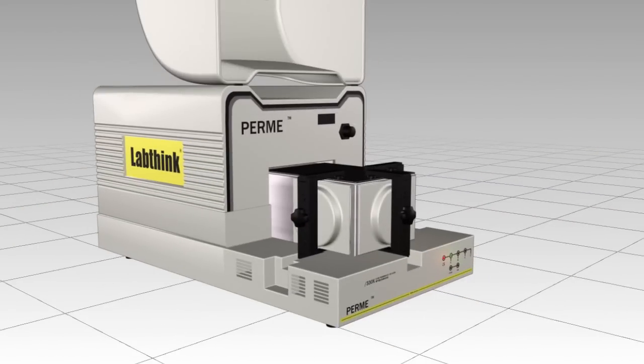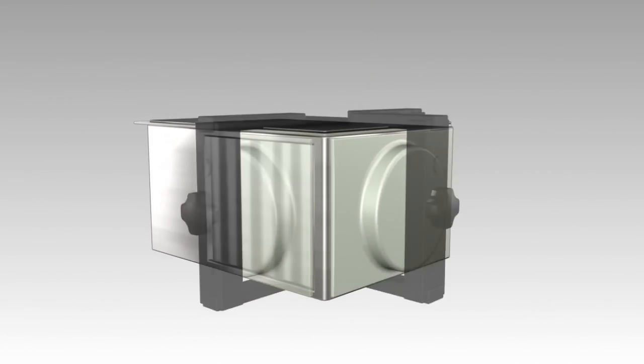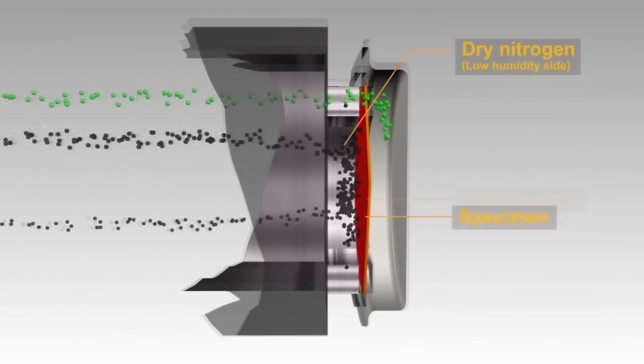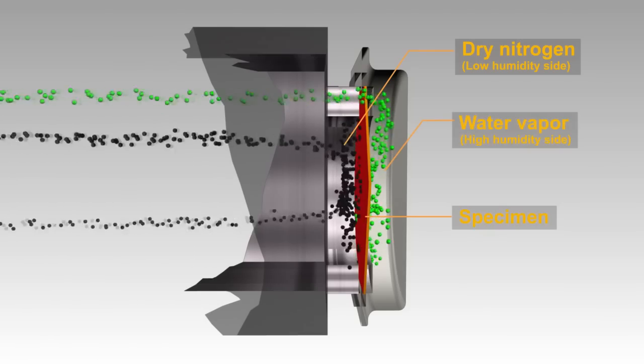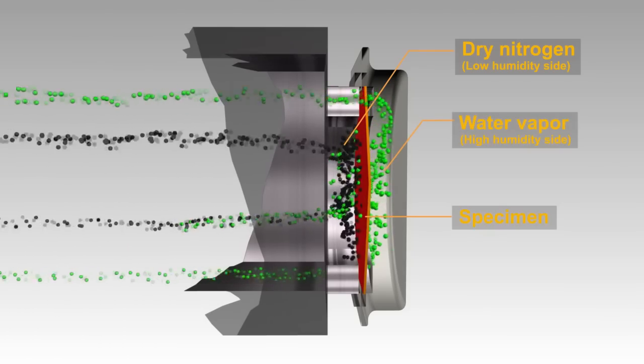W3330 works by firstly establishing a humidity difference across the two sides of the testing specimen. Then the water vapor molecules pass through the specimen from the high humidity side to the low humidity side.